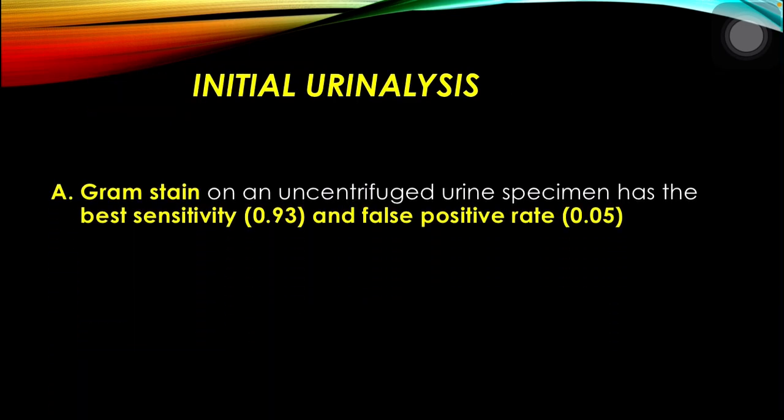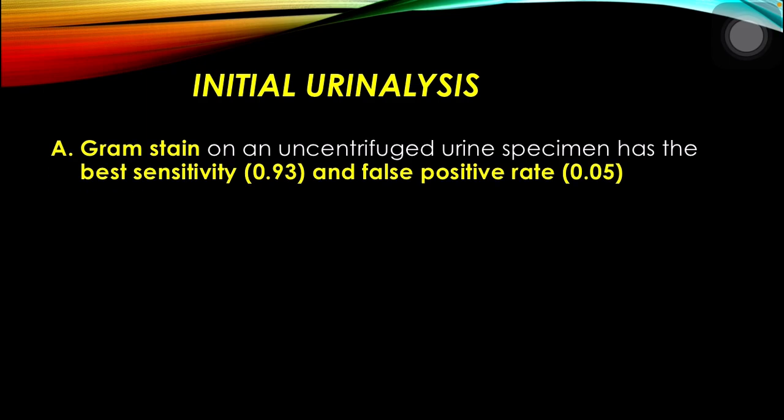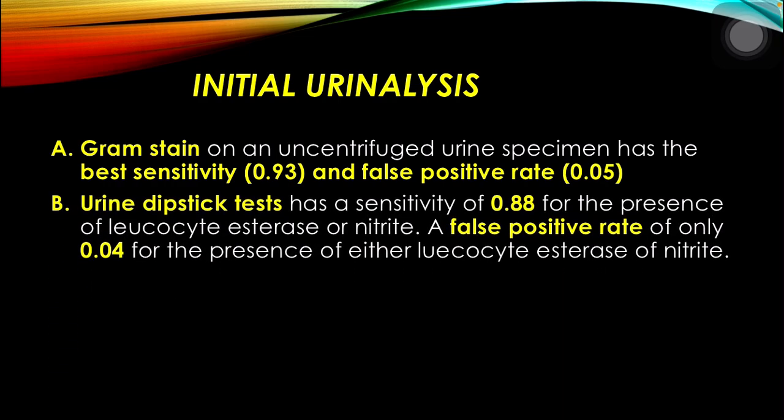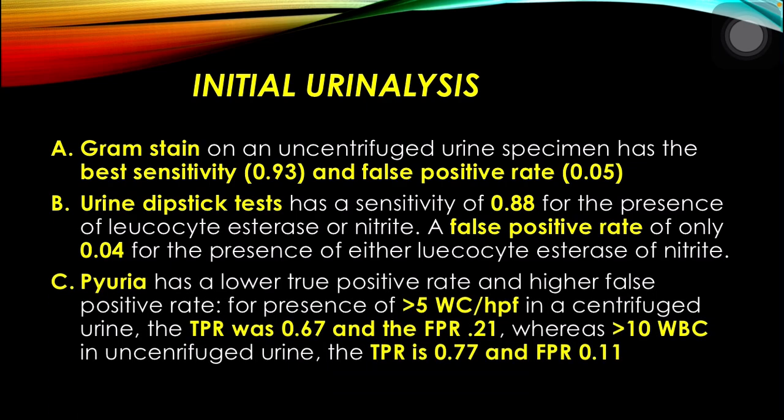On initial urinalysis, gram stain on an uncentrifuged urine specimen has the best sensitivity and false positive rate. Urine dipstick has a sensitivity of 0.88 for the presence of leukocyte esterase or nitrite, with a false positive rate of only 0.04. Pyuria has a lower true positive rate and higher false positive rate: for more than 5 WBC per HPF in centrifuged urine, TPR was 0.67 and FPR 0.21; whereas for more than 10 WBC in uncentrifuged urine, TPR is 0.77 and FPR 0.11.